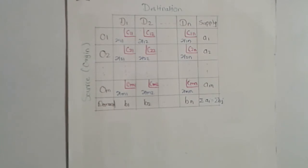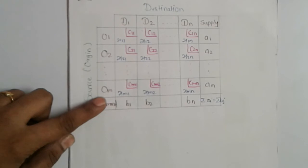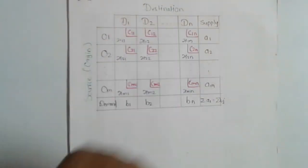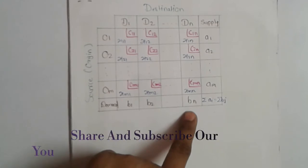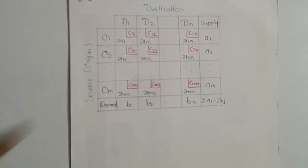This is the transportation model drawn from the linear programming problem. Now there are O1, O2 up to OM — M number of sources i.e. the origins — and D1, D2 up to DN i.e. N number of destinations, and B1, B2 up to BN i.e. N number of demands, and A1, A2 up to AM i.e. M number of supplies.